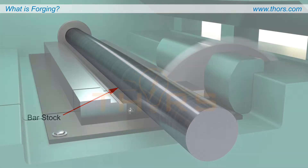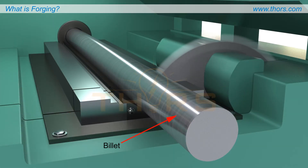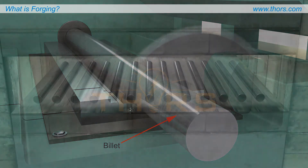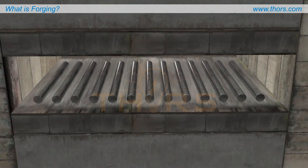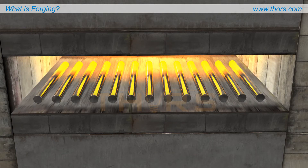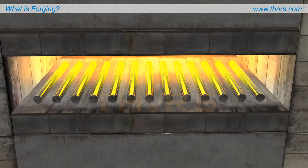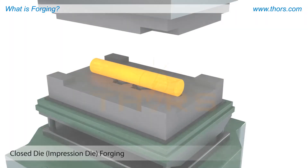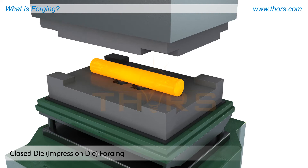The forge shop cuts these bars into billets of the required size before forging. Some parts are forged at room temperature; however, most conventional forgings are heated prior to being forged and therefore require less force and energy in the process.